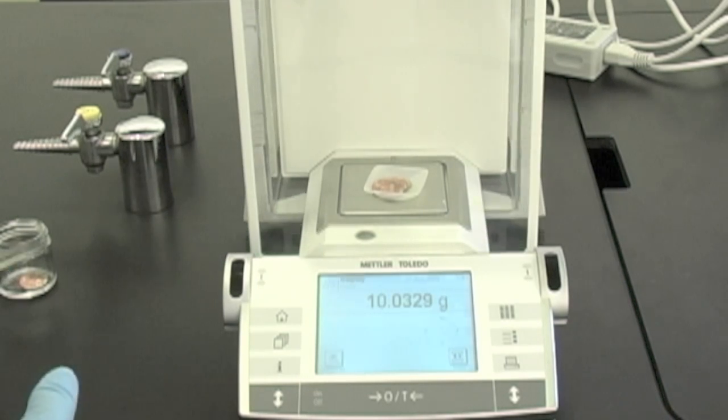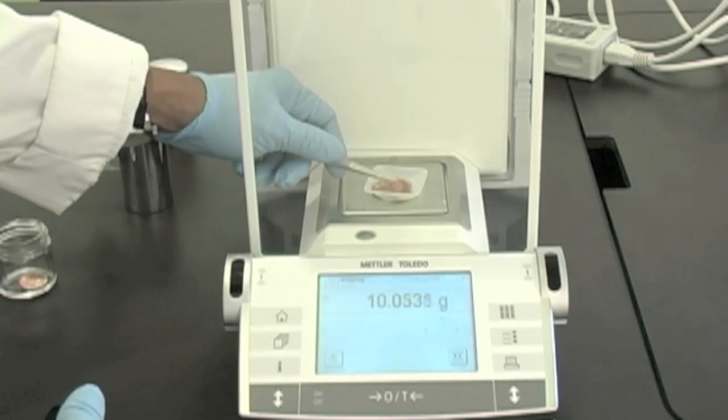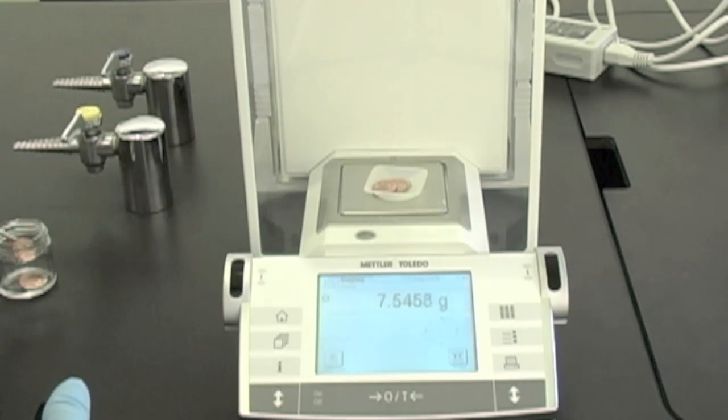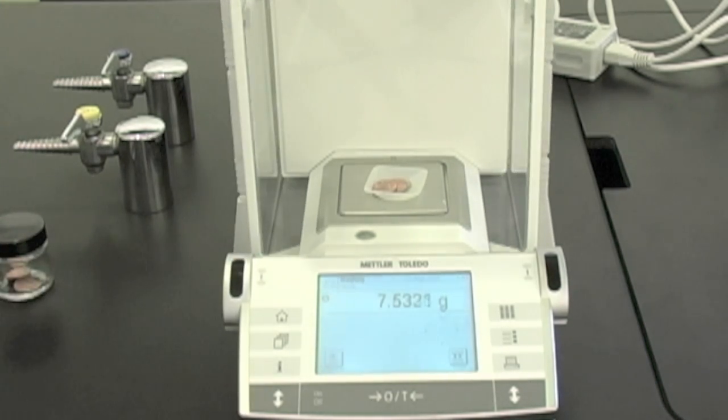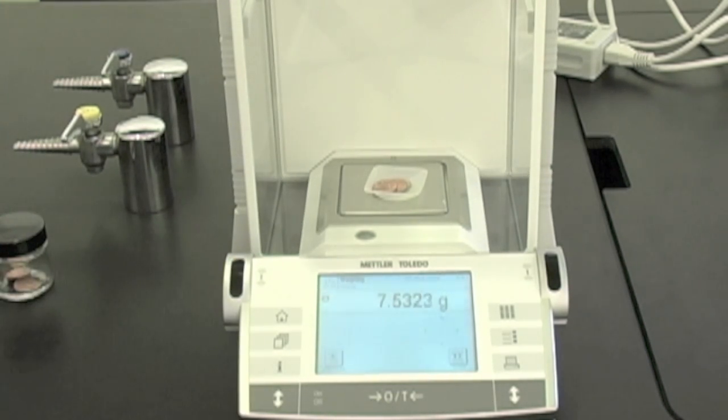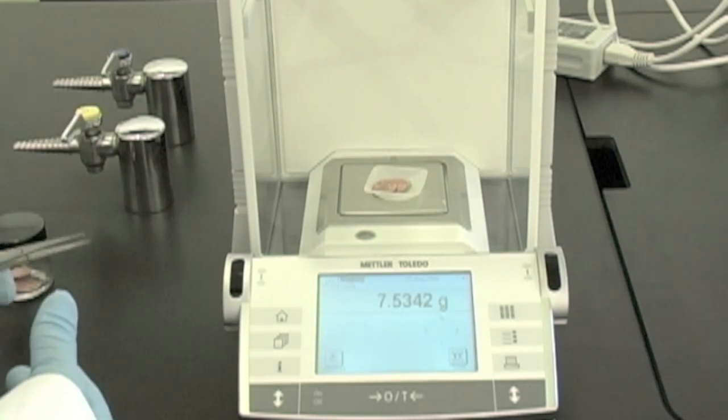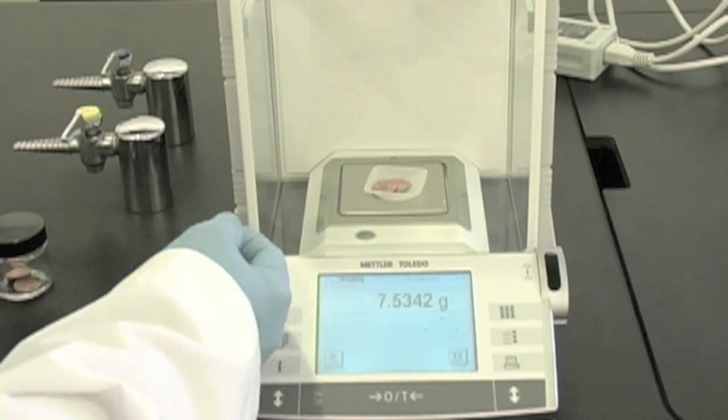Next, I would open it up. Remove the second penny. Close it. Again, wait for it to stabilize. The difference between the second mass and the third mass is the mass of the second penny. I would record this data on my data sheet.